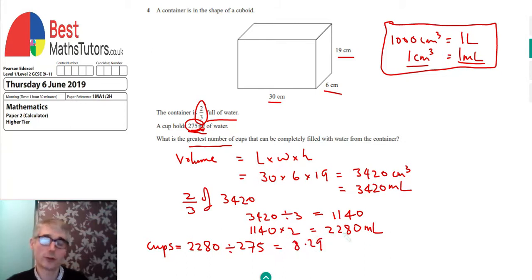We get 8.29 cups, but we want to know the greatest number of cups that can be completely filled. That's just rounding down to a whole number of cups, which means we can fill 8 cups completely. And that's it, we've done the question.